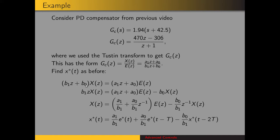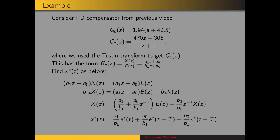We go through the same process: first cross multiply, getting B1Z plus B0 times X of Z, etc. We solve for the term with the highest power of Z operating on X of Z, which is B1Z. We subtract B0 times X of Z from both sides, then divide both sides by B1 over Z. We end up with X of Z equals A1 over B1 plus A0 over B1 times z-inverse, all times E of Z. Taking the inverse Z-transform gives x-star of t in terms of the current error, the error from one sampling period ago, and the output from one sampling period ago. Note: beware of copy-paste errors — the delay here is one sampling period, not two.